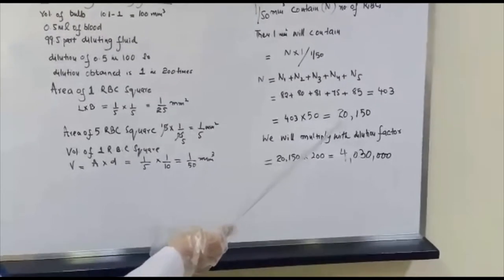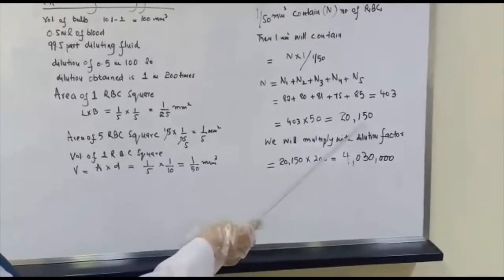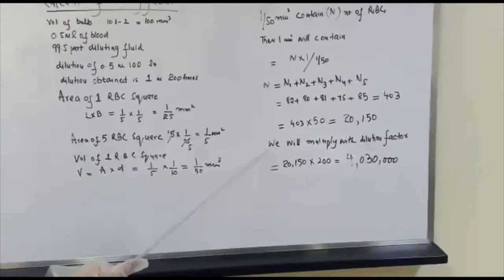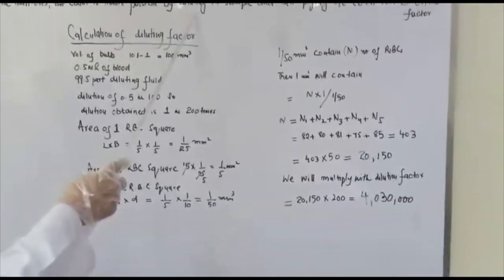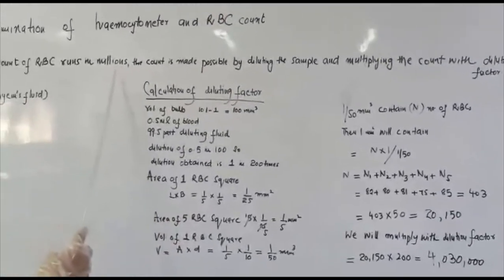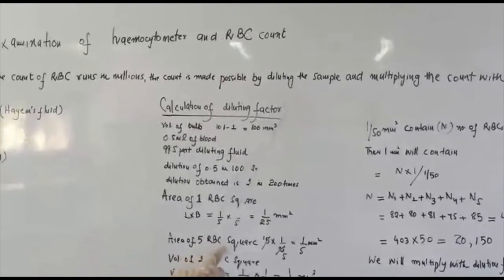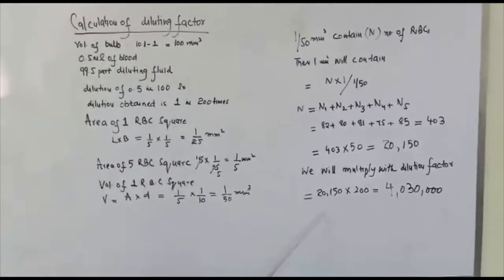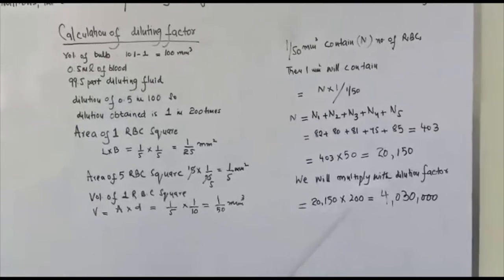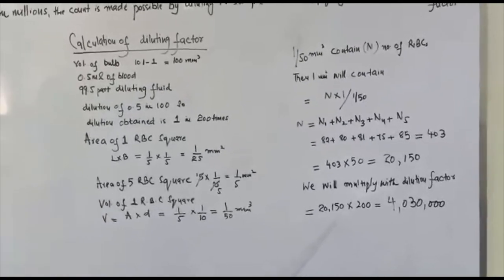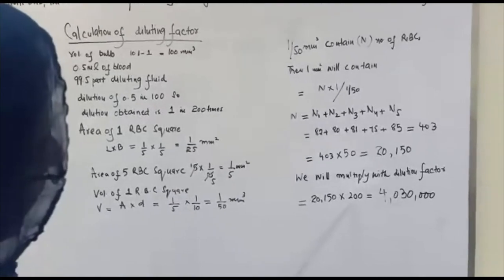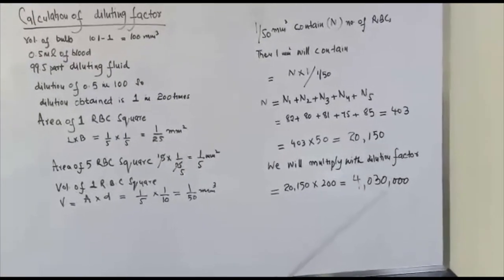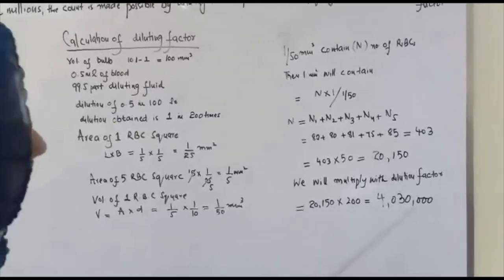We multiply 403 by 50, which comes to 20,150. As I told you in the principle, the count is made possible by diluting the sample and multiplying with the dilution factor. So 20,150 is multiplied by 200, which comes to 4,300,000 number of RBCs in that sample of blood.